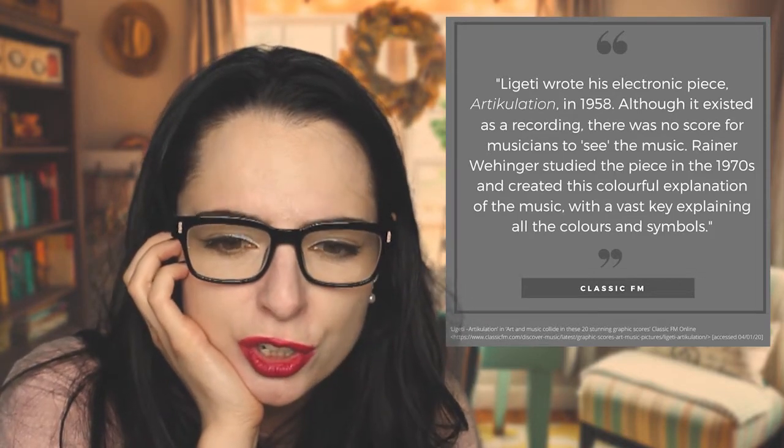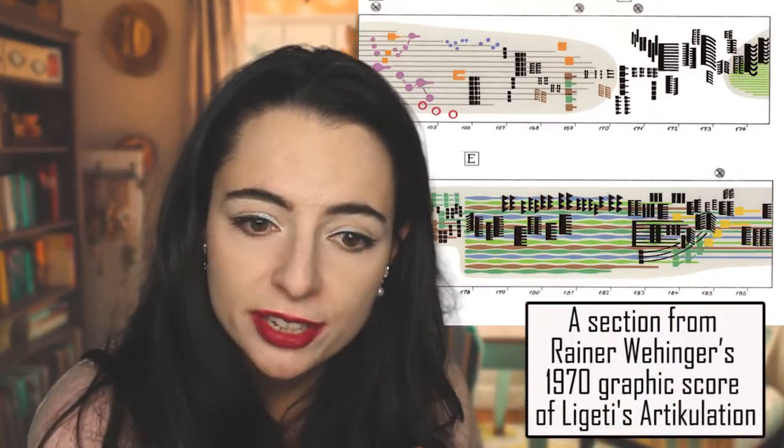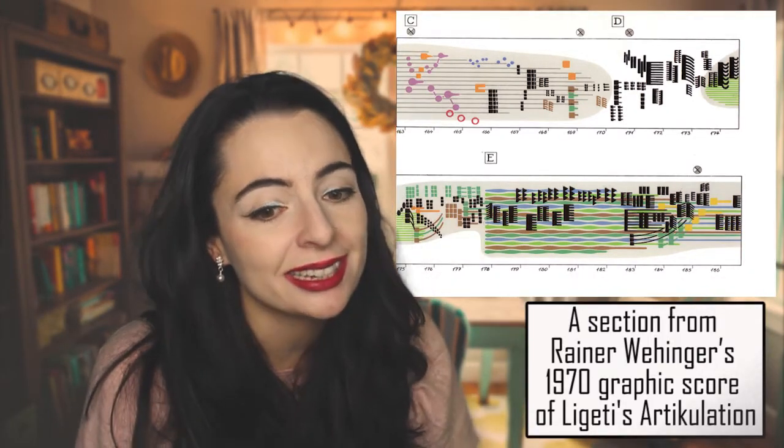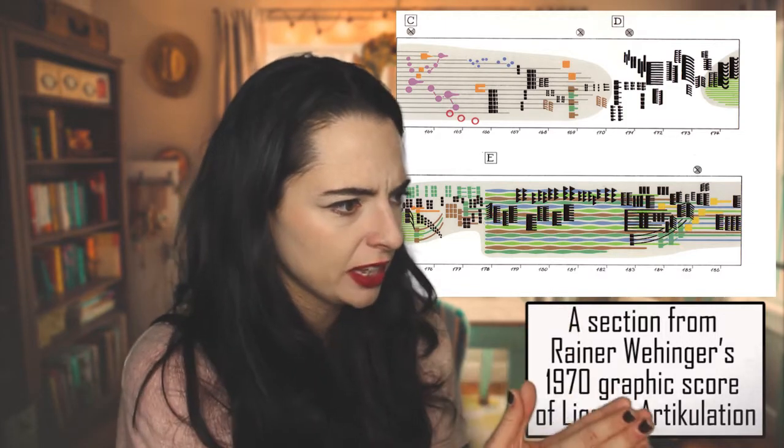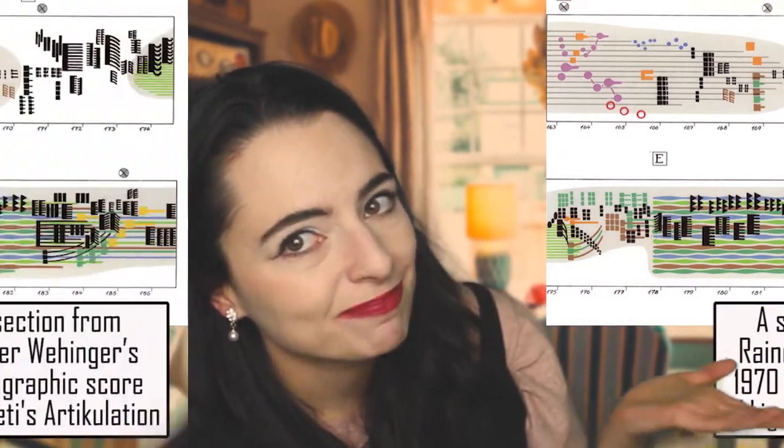Not only can graphic notation be used to give instruction on how to perform a piece, but it's also used to create a visual representation of existing music. For instance, Ligeti's Articulation is an electronic piece of music that is visually rendered in a notable image. Ligeti wrote this electronic piece in 1958, but although it existed as a recording there was no score for musicians to see. Rainer Wehinger studied the piece in the 1970s and created a colorful explanation of the music with a vast key explaining all the colors and symbols — similar to what Kandinsky did, but intended as a specific, followable score.